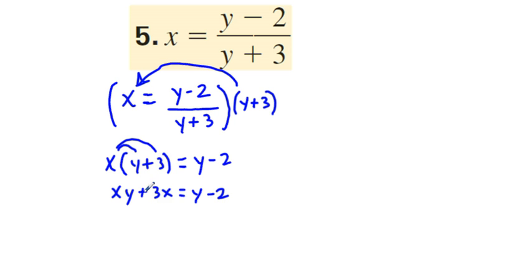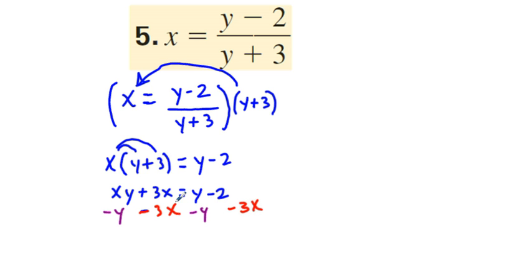We're going to subtract 3x from both sides of the equation, and also subtract y from both sides of the equation. So 3x minus 3x cancels, and y minus y cancels, and we write what we have left, which is xy minus y is equal to negative 2 minus 3x.